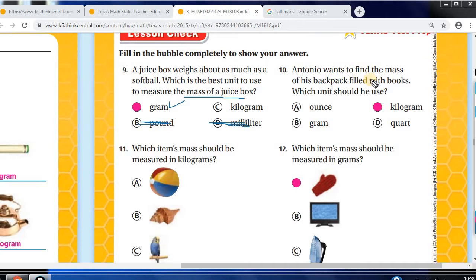Number 10. Antonio wants to find the mass of his backpack filled with books. So again, which unit should he use? Ounce is either gram or kilogram. Remember ounce, quart, they both measure liquid volume. One is the customary, and one is, but they both are customary here. So it's either kilogram or gram. It would be kilogram.